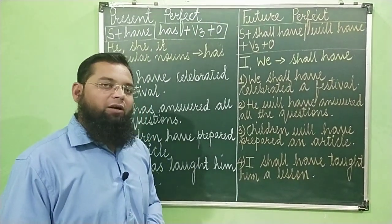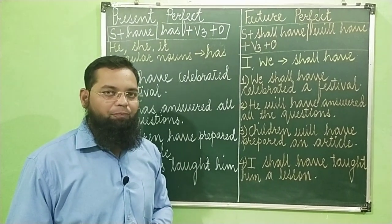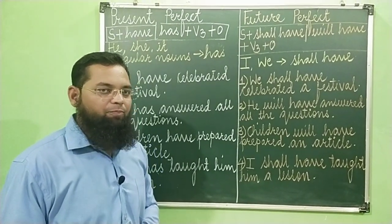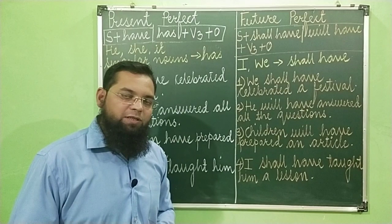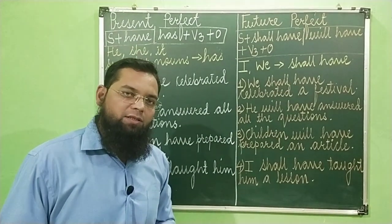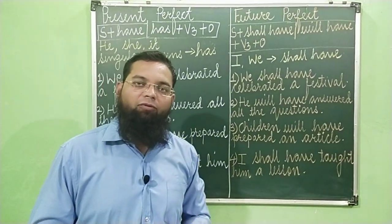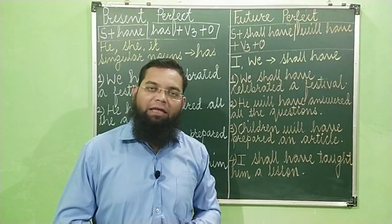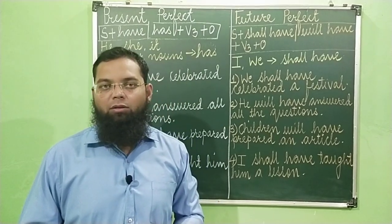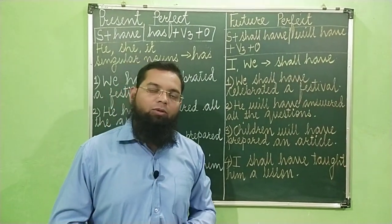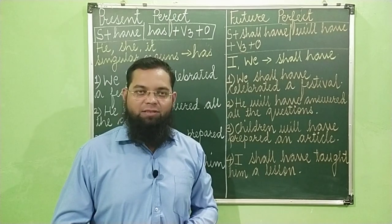And with the remaining subjects we are going to use 'have'. And when do we use present perfect tense? We use present perfect tense whenever we have to indicate that a particular work or a particular action is completed in present.